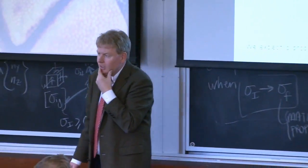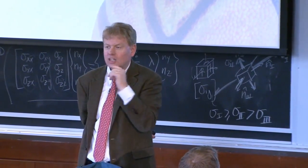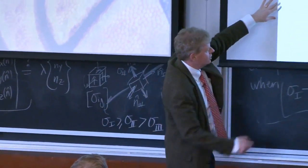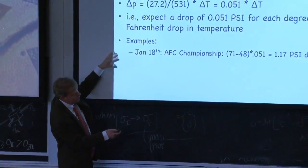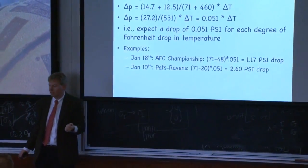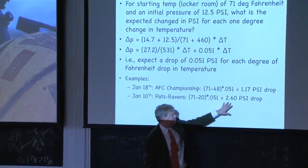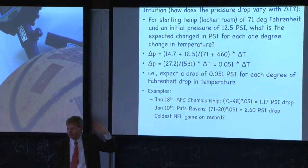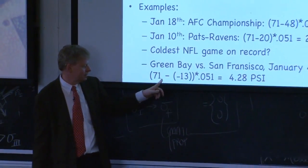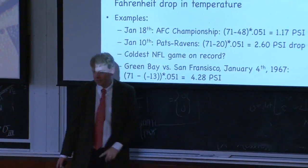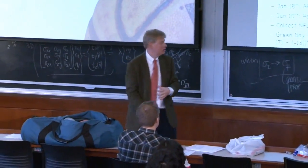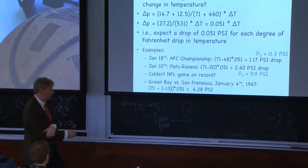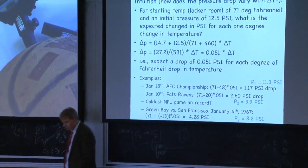Here we had 71 minus 48, a 1.17 or 1.2 PSI drop. Patriots Ravens, it was a 2.60 PSI drop. If this is such a big deal, why didn't anybody notice? Coldest NFL game on record was minus 13 degrees in Green Bay. We can say it's an 84 degree difference, 84 times 0.05, 4.28 PSI drop. If you looked at what the pressure would be measured on the field for the Colts, 11.3 PSI. A week before, 9.9 PSI with the Ravens. Coldest NFL game on record, 8.2 PSI.